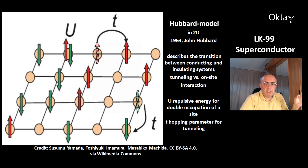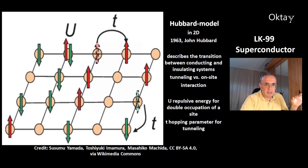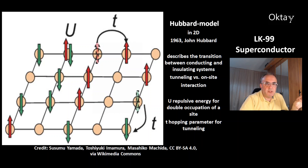This is a Hubbard model in 2D. It was invented by John Hubbard in 1963 and describes the transition between conducting and insulating systems. There are two different effects: one is the on-site interaction, and the other one is tunneling. In this model, U is the repulsive energy for double occupation of a site, and T is the hopping parameter for tunneling.